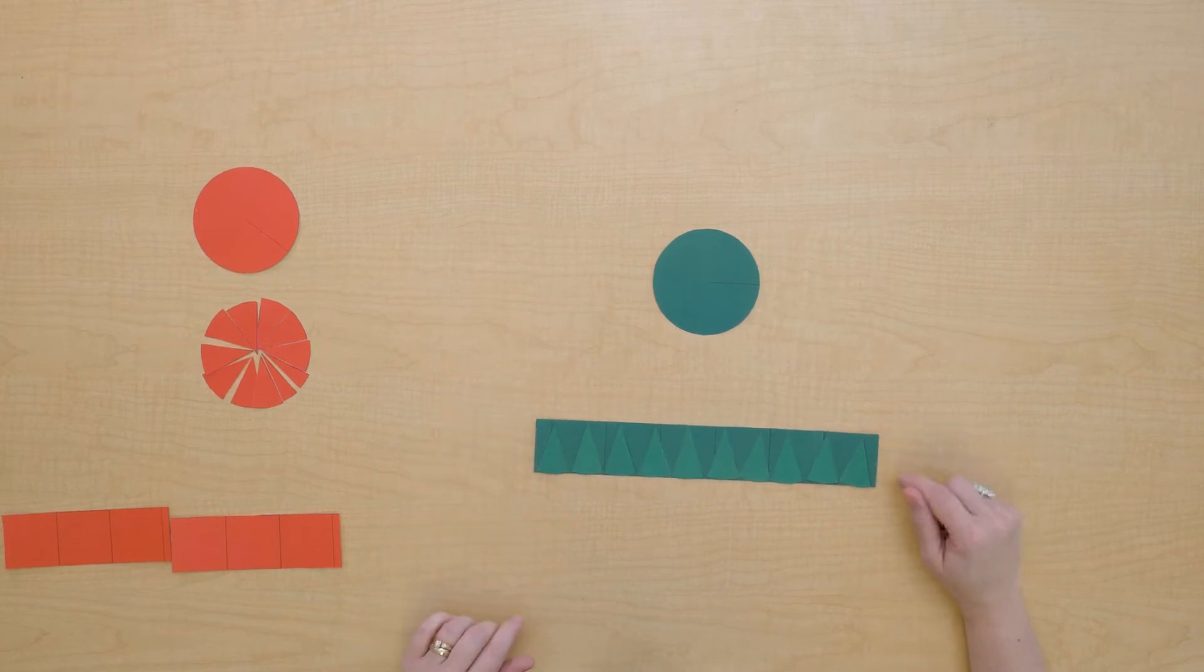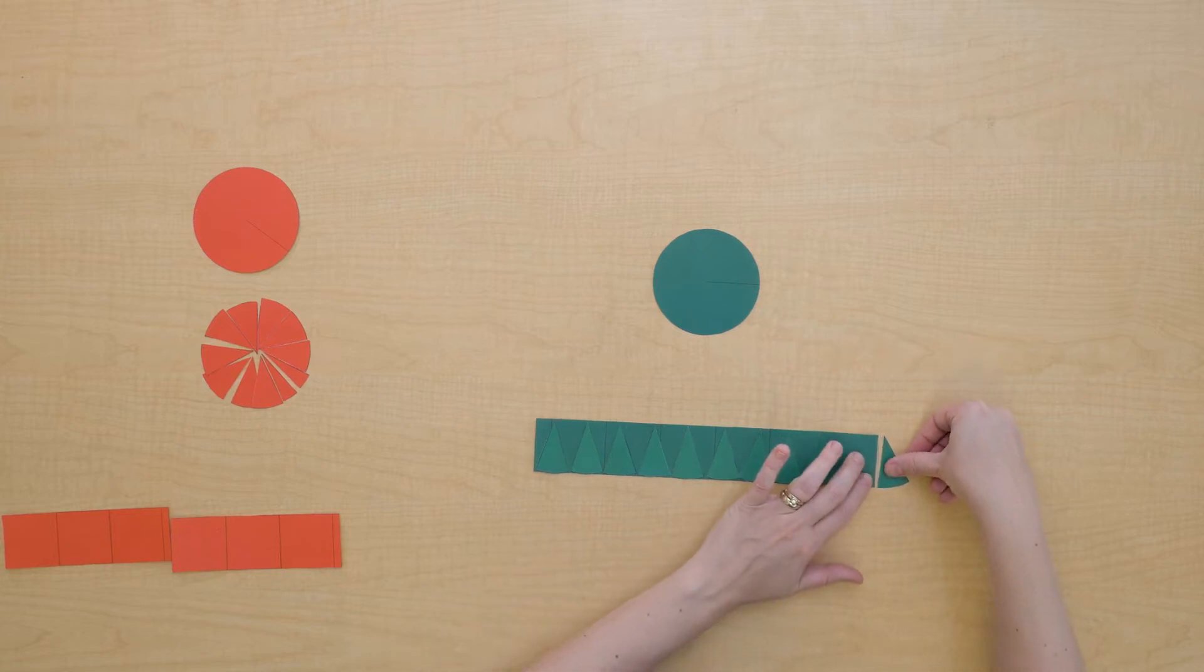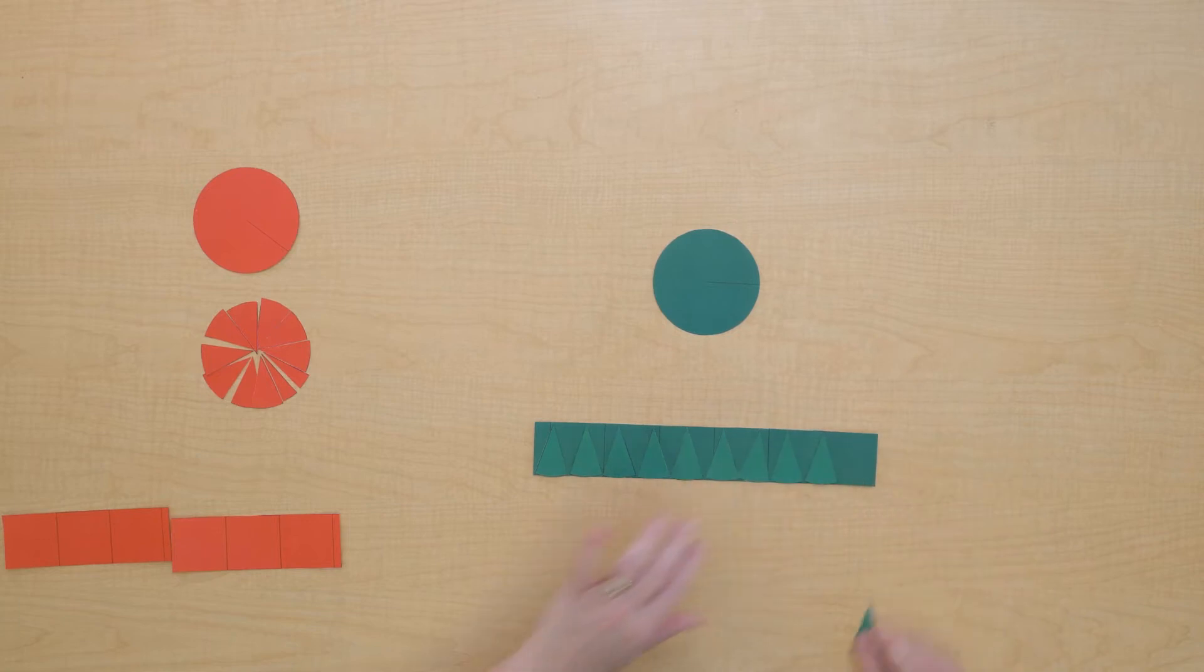All right, so I've been able to pretty much create the base of this rectangle. And the base of this rectangle is the circumference, pretty close to the circumference. The height of this rectangle is a radius, but I haven't filled in the whole rectangle, have I?